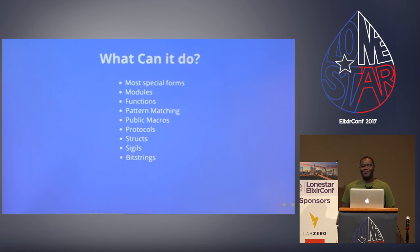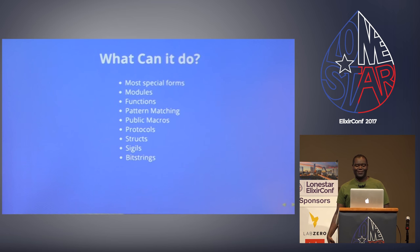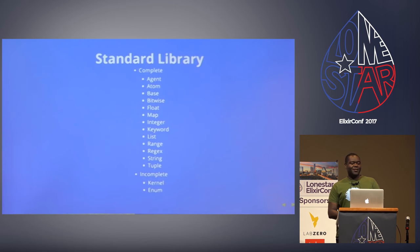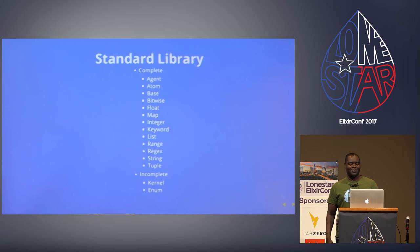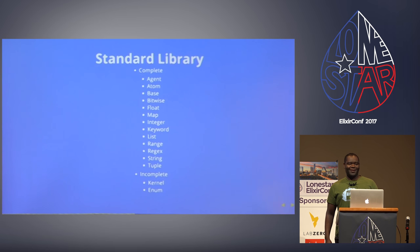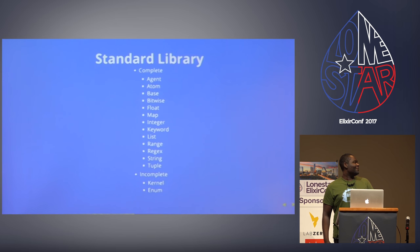What can it do so far? Most special forms are supported: modules, functions, pattern matching, public macros, protocols, structs, sigils, and bit strings. For the standard library, there are many complete modules. Kernel and Enum are incomplete — Enum is also the only standard library module not actually implemented in ElixirScript itself. All others are implemented in Elixir.